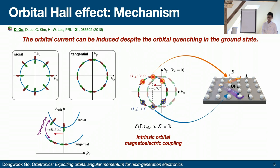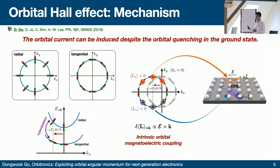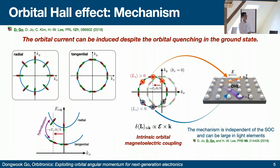When you first think about orbital quenching, the idea of orbital transport seems strange because there is no orbital angular momentum in the ground state. But what happens in non-equilibrium is that by an electric field or any other perturbation, you induce orbital angular momentum — and once induced, it flows in a dissipationless manner, especially for the orbital Hall effect. This mechanism is independent of spin-orbit coupling. It results from the crystal field potential responsible for orbital quenching — which thus has both a good and bad side for orbital physics.